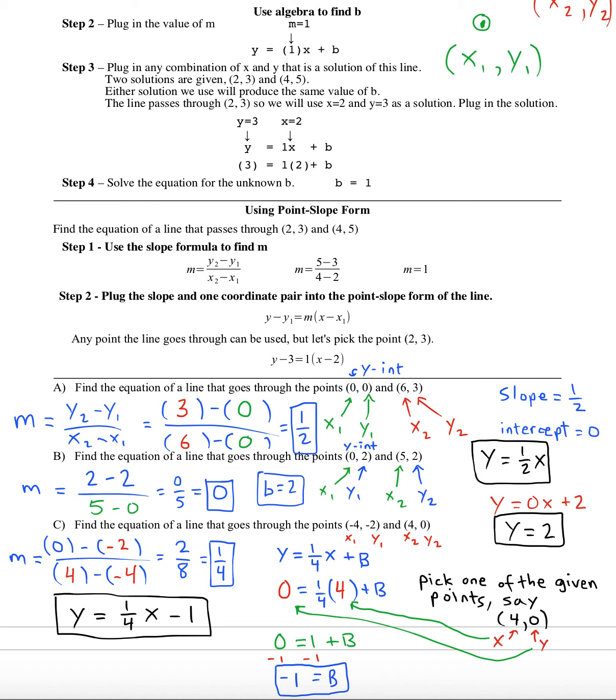Now in order to check that this really is correct, you could plug in one of the solutions and make sure that it checks. So like take that negative four, negative two. Plug in your negative two for y. Plug in your negative four for x. Let's see if it checks. Negative two, that'll be a negative one. Negative two equals negative two, it checks. And you can check it for the other solution as well.